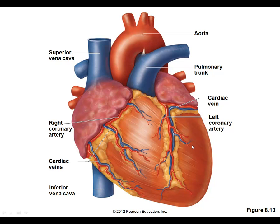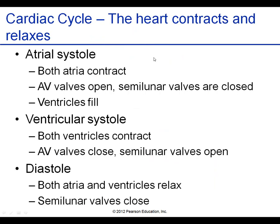Interestingly, there is a small ligament called the ligamentum arteriosum connecting the aorta with the pulmonary trunk. This was once an actual tube called the ductus arteriosus, which in infancy allowed mixing of oxygenated and deoxygenated blood. This tube must close after birth; if it remains open — called patent ductus arteriosus — it leads to problems later on.